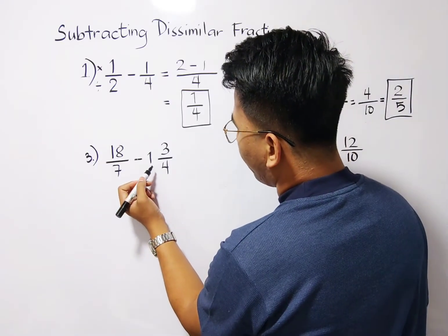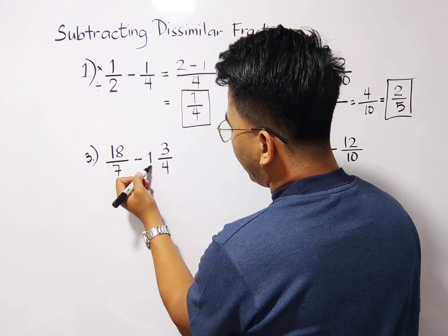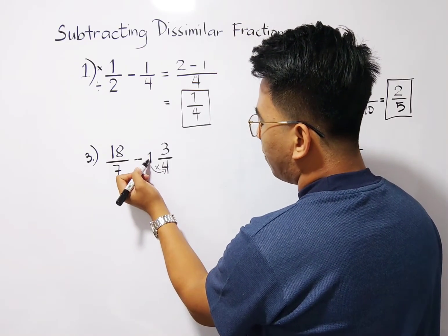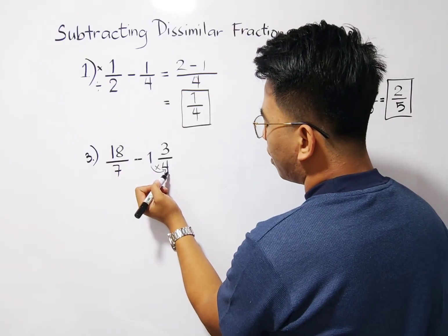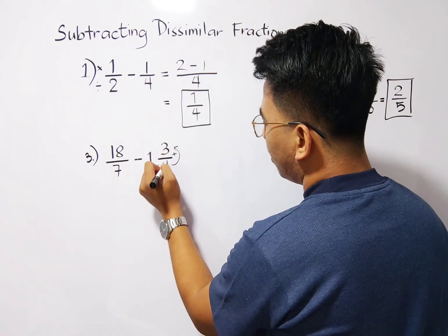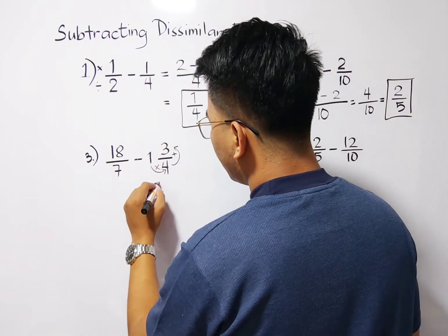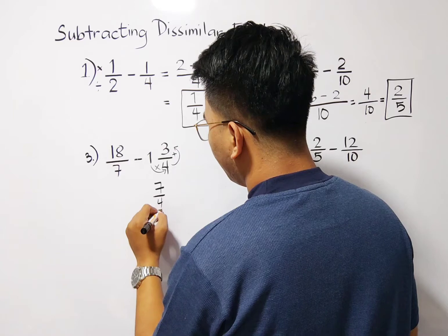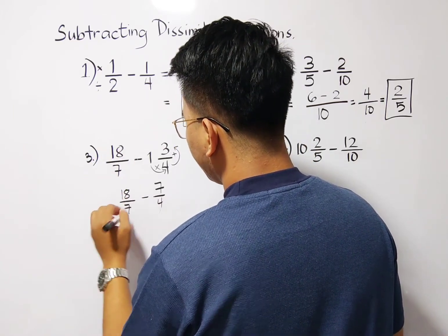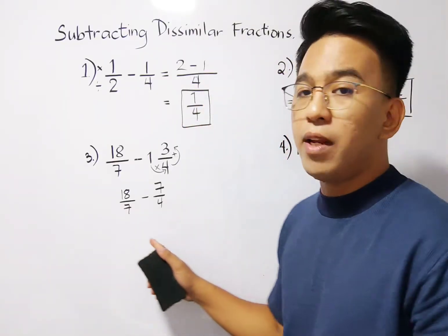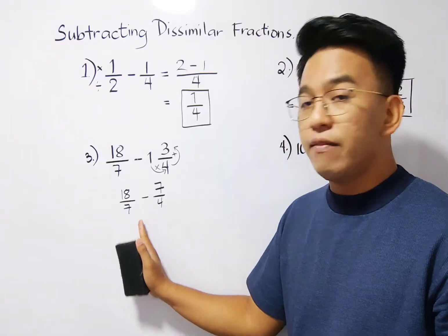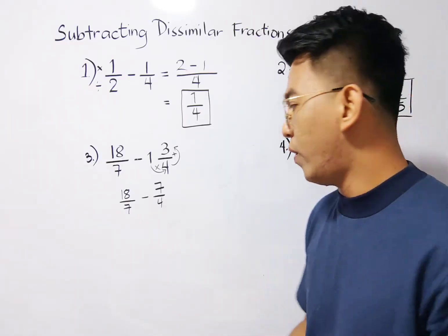We have here 18 over 7 and this part should be converted into an improper fraction. So for the improper fraction, our way here is to multiply first 1 times 4. Multiply your mixed number denominator 1 times 4, that is 4, plus 3, that is equal to 7 over 4. And this one, minus 18 over 7. Now given your denominator as 7 and 4, your denominators are 7 and 4, the least common denominator is 28.